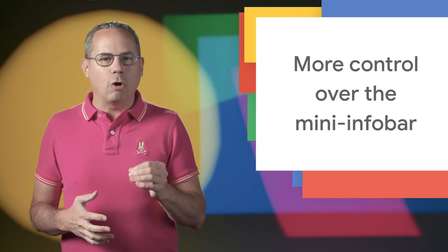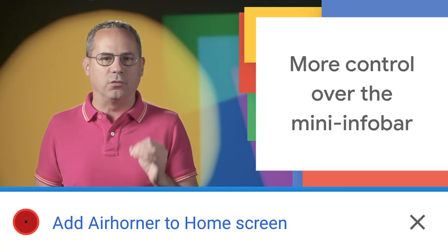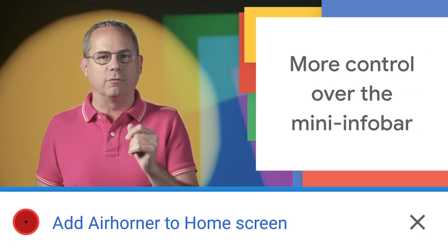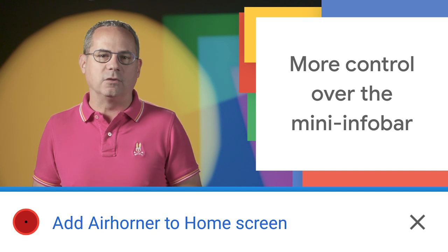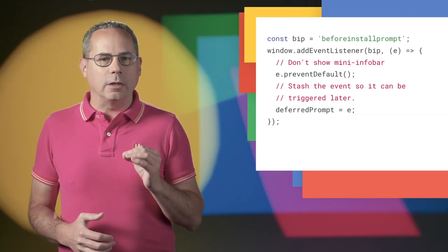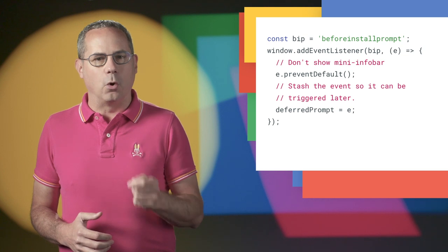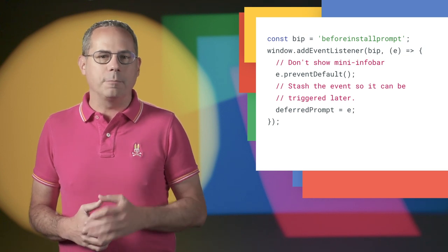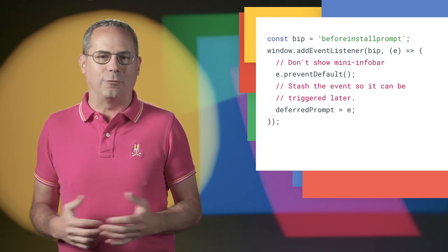On mobile, Chrome shows the mini info bar the first time a user visits your site if it meets the progressive web app installability criteria. We heard from you that you want to be able to prevent that mini info bar from appearing and provide your own install promotion instead. Starting in Chrome 76, calling preventDefault on the before install prompt event will stop the mini info bar from appearing.